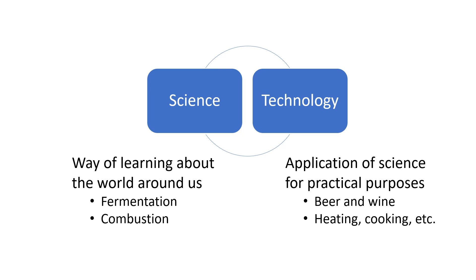A couple of examples to show the relationship between science and technology. The first one is fermentation. Fermentation is a process where yeast interacts with sugars and produces alcohol and carbon dioxide. It's been probably just the last couple hundred years that we had a real scientific understanding of that process, but the practical application of fermentation would be creating things like beer and wine and other alcoholic beverages — and beer and wine have been around a whole lot longer than our scientific understanding of fermentation.